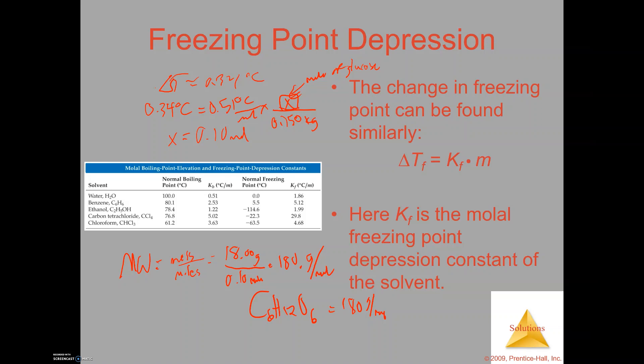Boiling point elevation and freezing point depression use essentially the same equation — the only difference is using K_b for boiling point elevation versus K_f for freezing point depression.